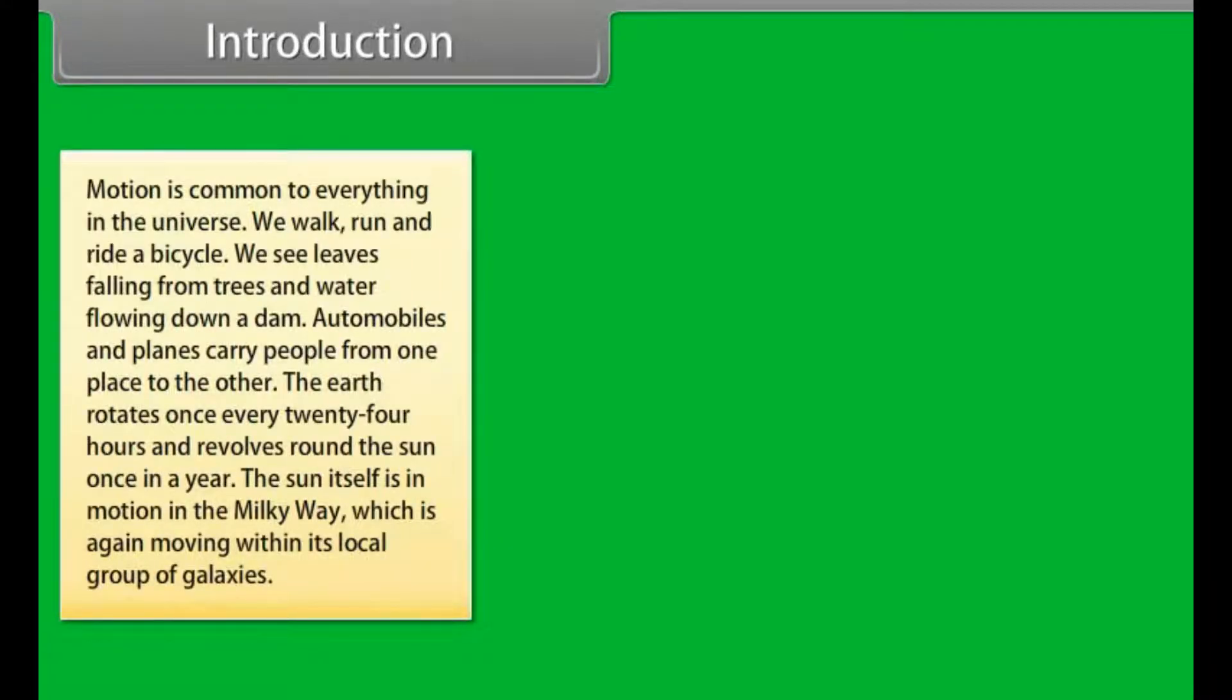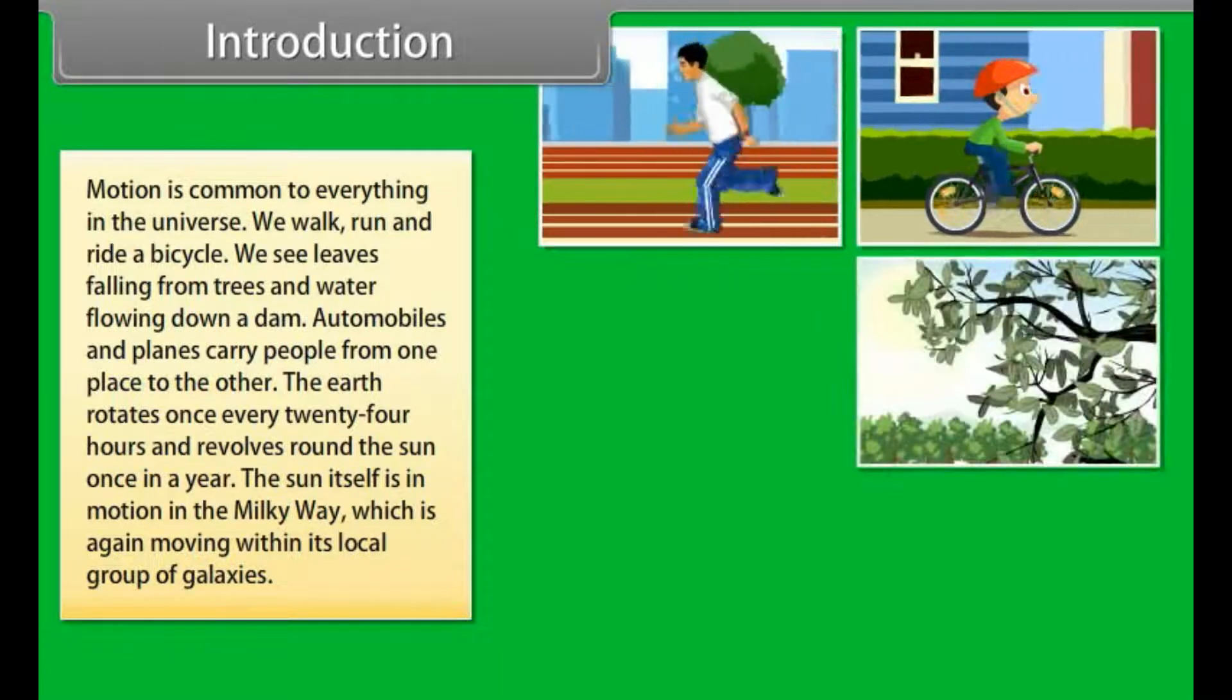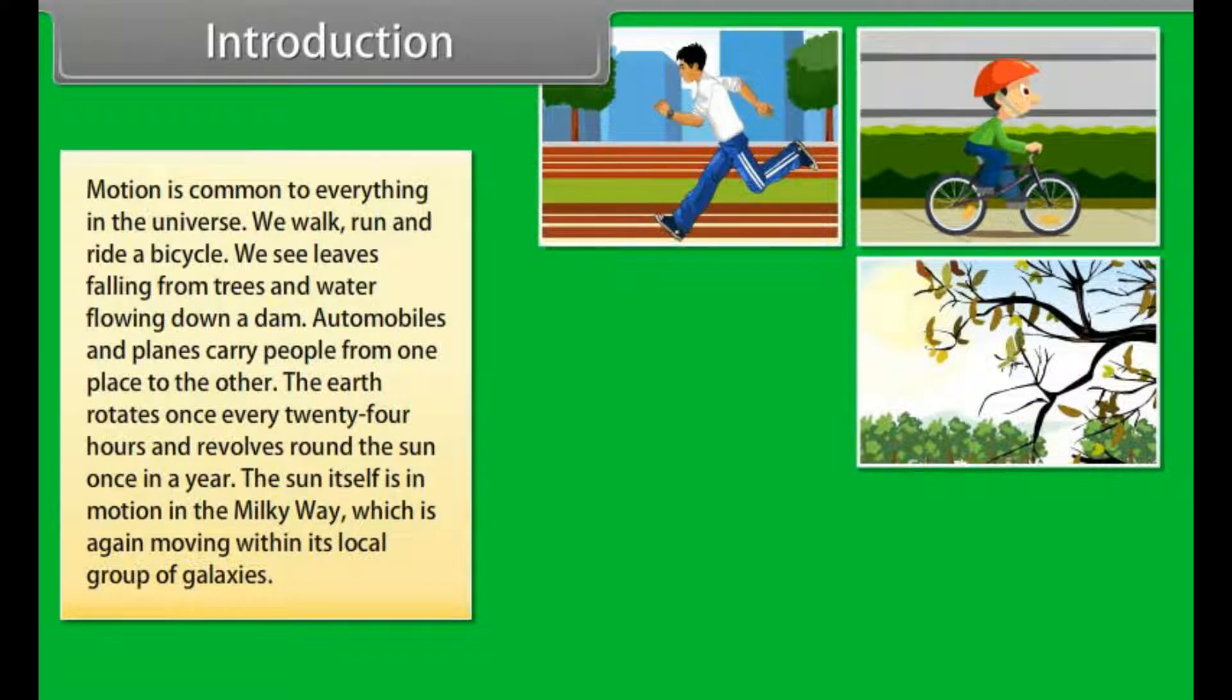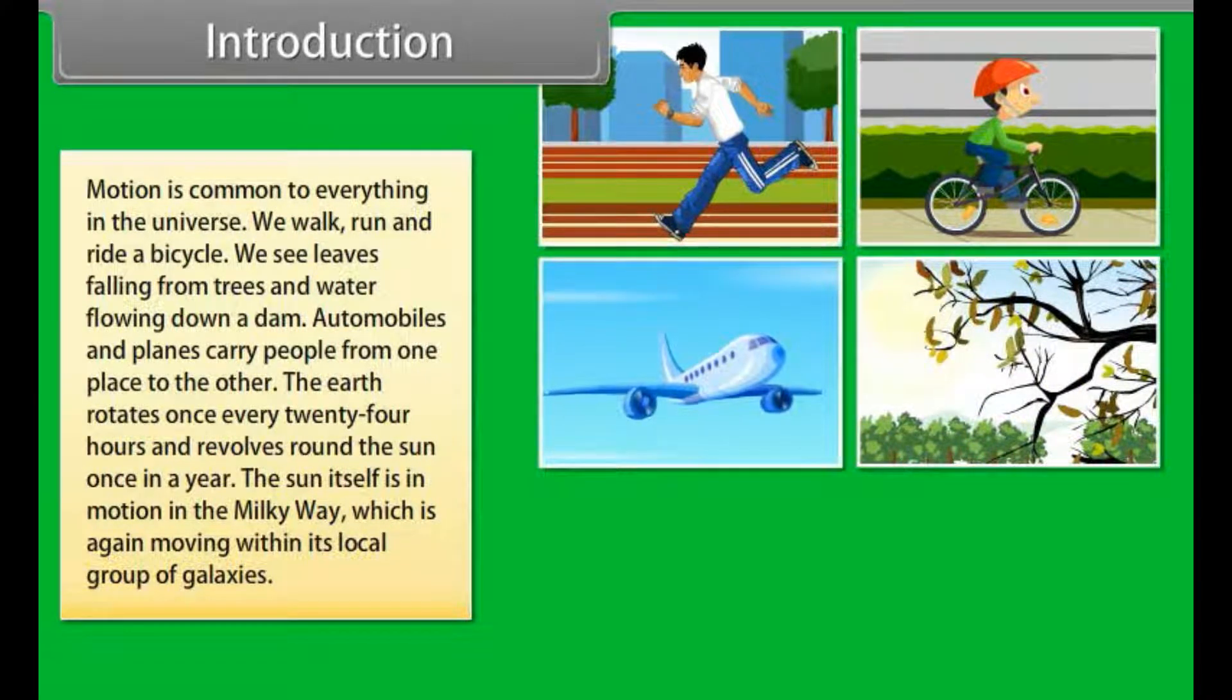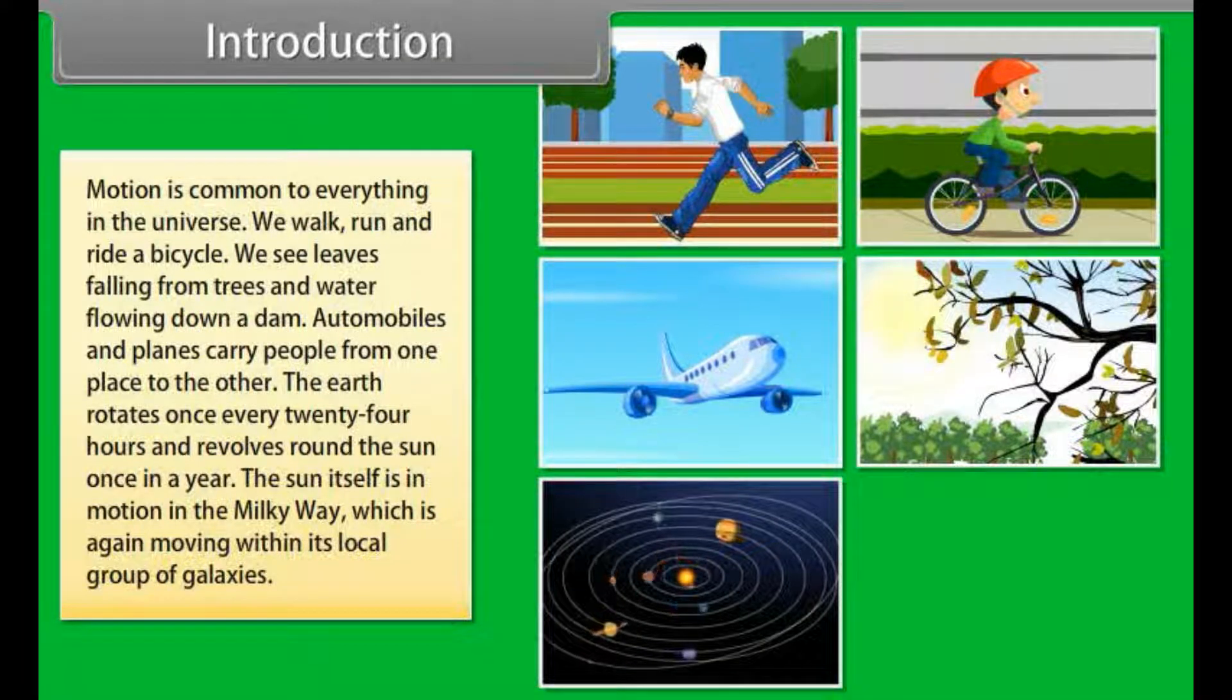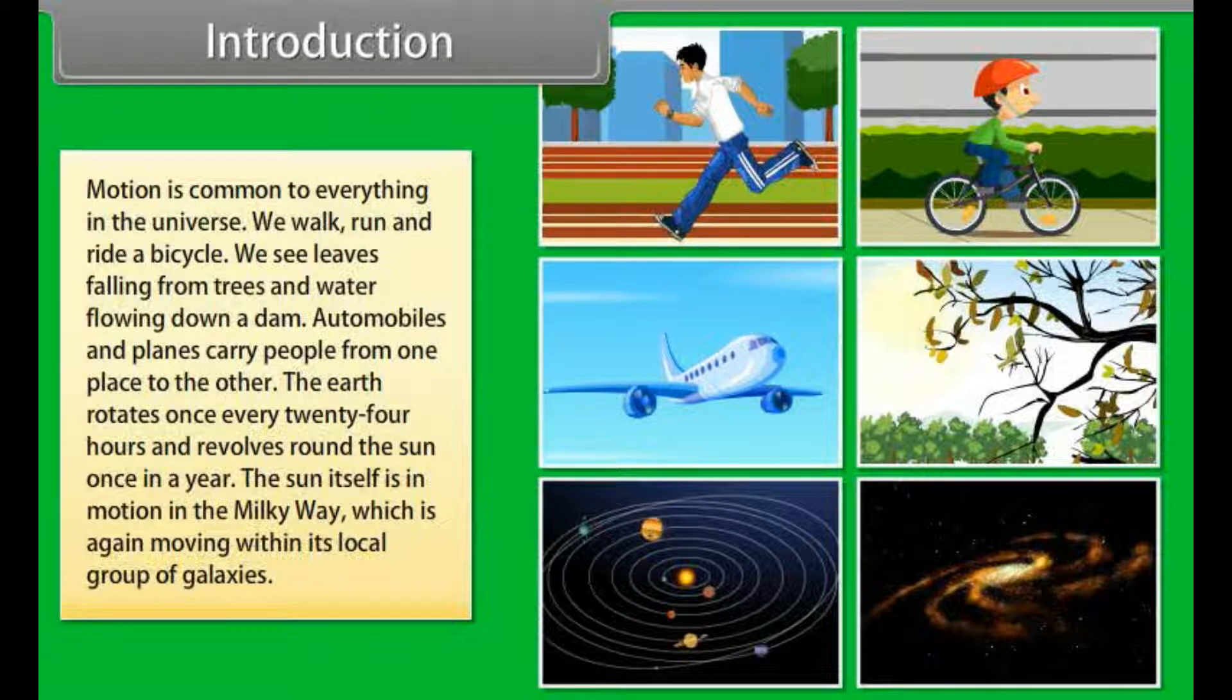Introduction. Motion is common to everything in the universe. We walk, run and ride a bicycle. We see leaves falling from trees and water flowing down a dam. Automobiles and planes carry people from one place to the other. The earth rotates once every 24 hours and revolves around the sun once a year. The sun itself is in motion in the Milky Way, which is again moving within its local group of galaxies.